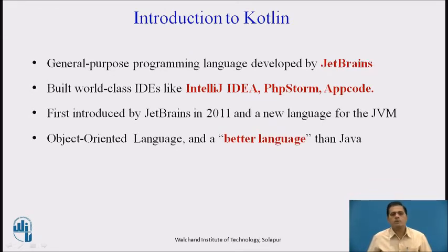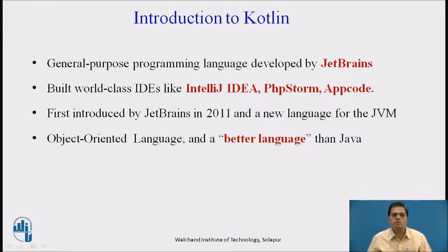First of all, we will see an introduction to Kotlin. Kotlin is a statically typed, general purpose programming language developed by JetBrains, which has built world class IDEs like IntelliJ IDEA, PHPStorm, AppCode, etc. It was first introduced by JetBrains in 2011 as a new language for the JVM, that is, the Java Virtual Machine. Kotlin is an object-oriented language and a better language than Java, but still fully interoperable with Java code. Kotlin is sponsored by Google and was announced as one of the official languages for Android development in 2017.